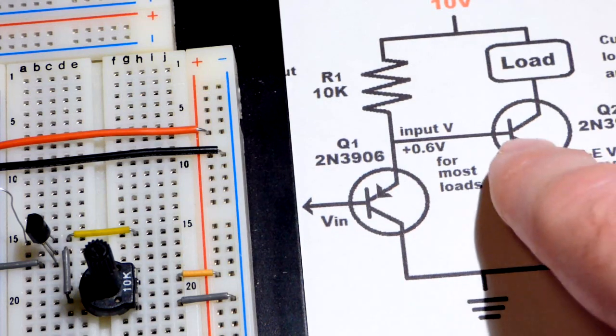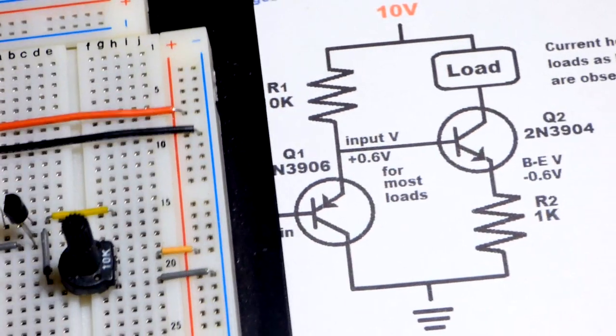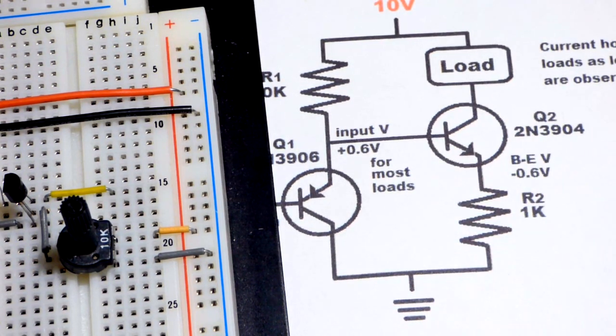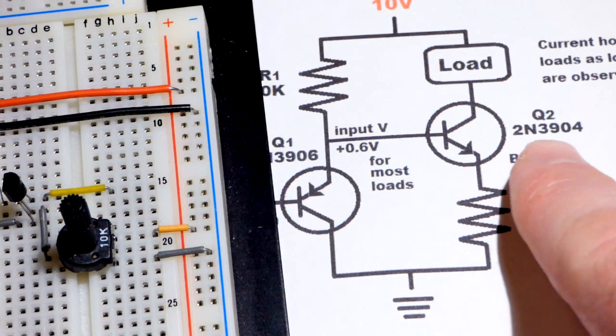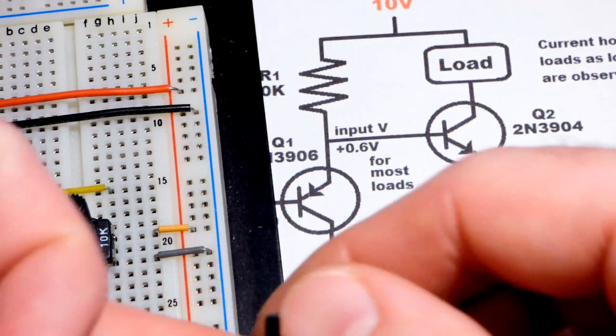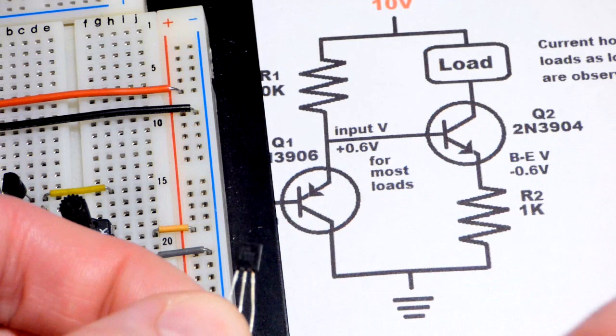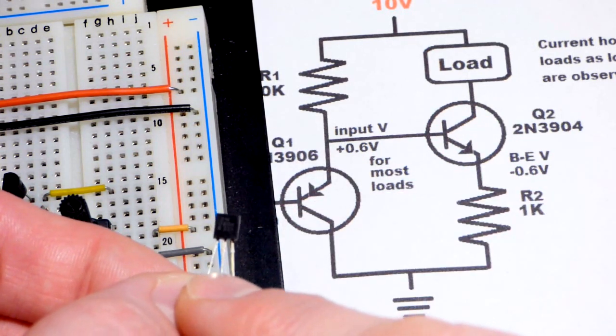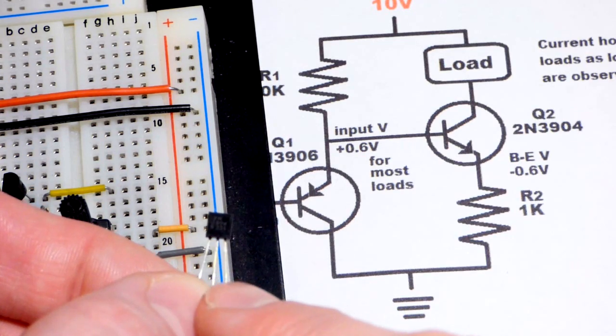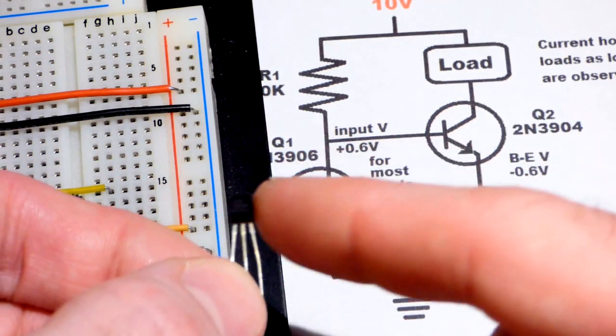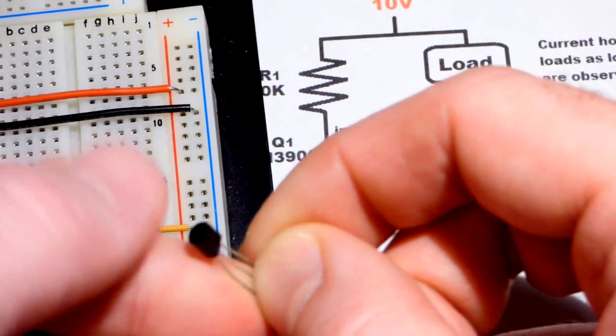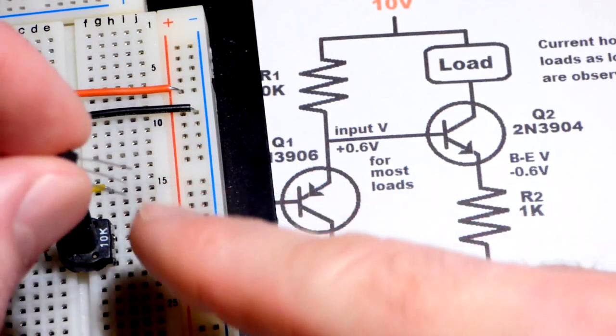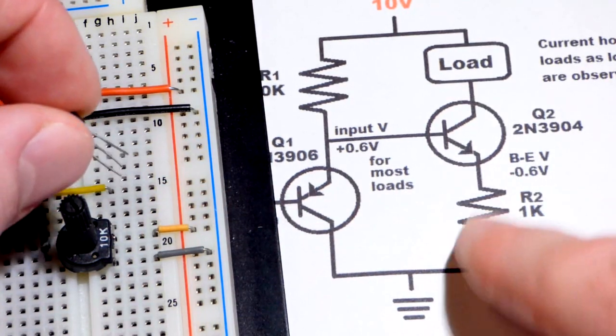That brings us to the NPN transistor. I'm going to use the 2N3904. Again, we have emitter to the left, base in the middle, and collector to the right. We want the emitter down, so now we're going to turn it this way. The flat side will be to the right, with the emitter towards the bottom, and we're going to connect that to ground with a resistor.